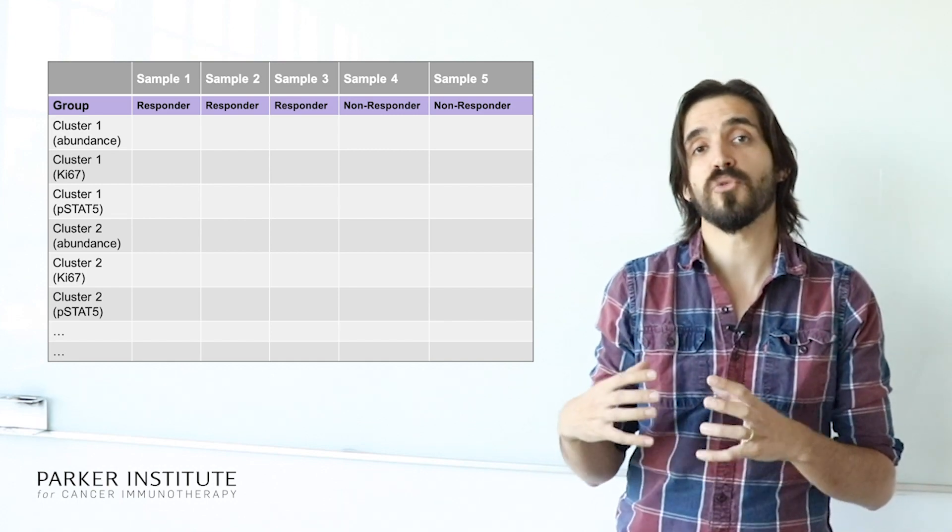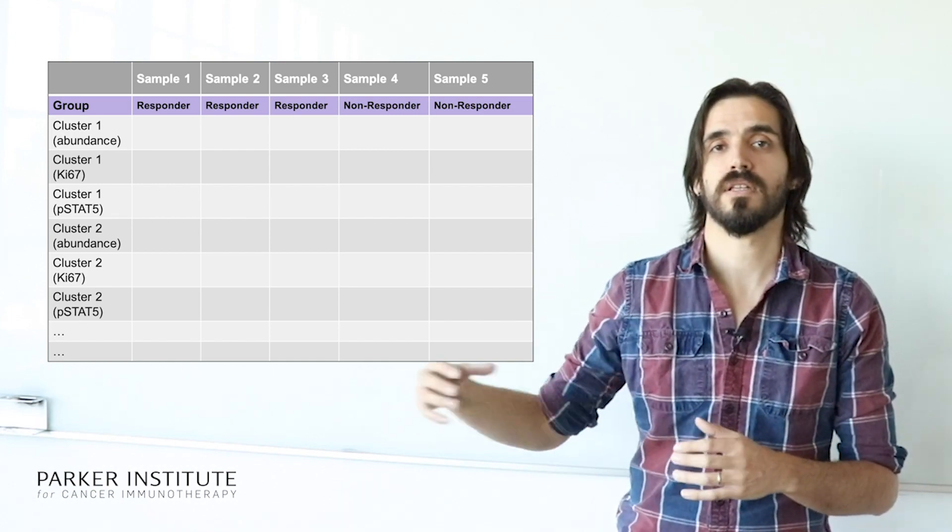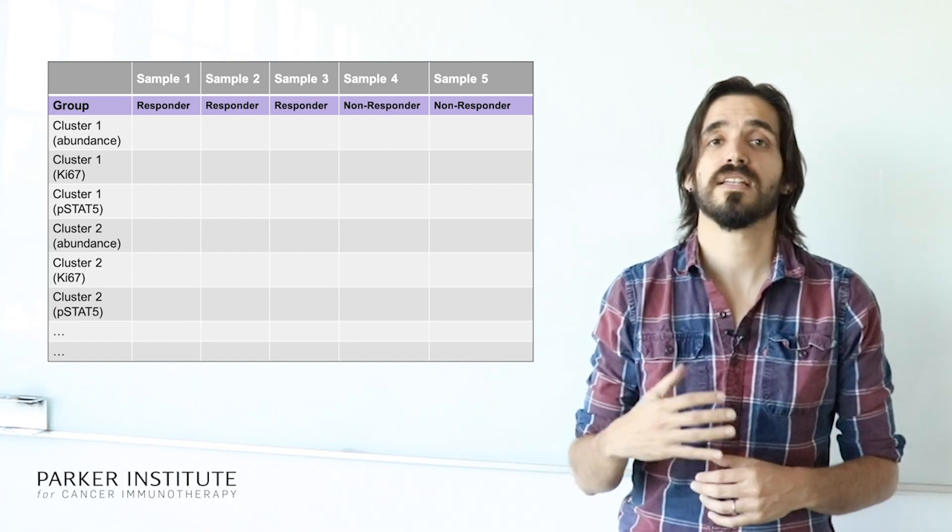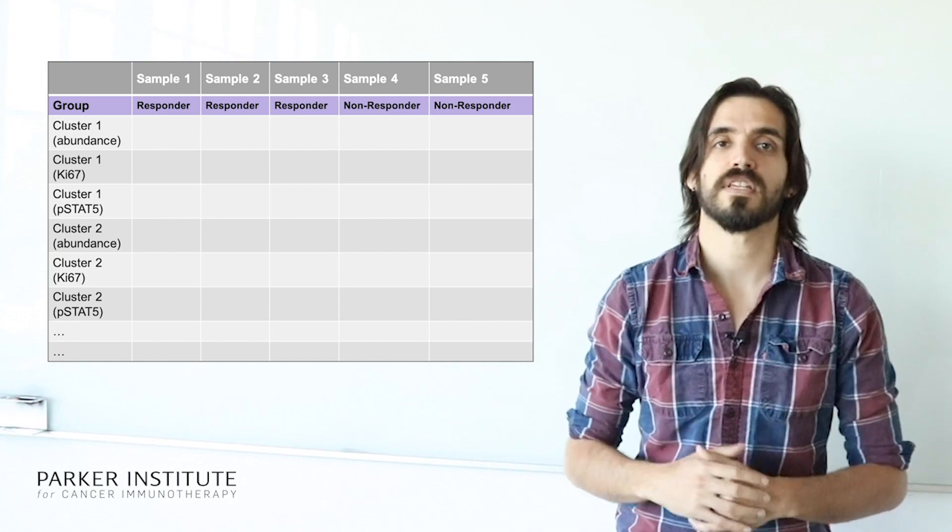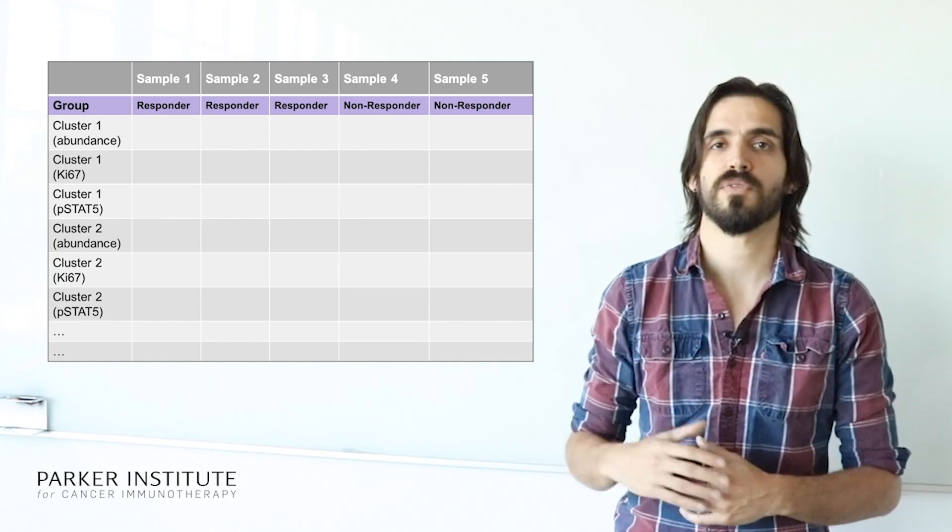So instead of just looking at the frequency of your cluster in the individual sample, you can also look at the activation state of that cluster in that sample by using markers, once again, such as Ki-67 or phospho-STAT5.